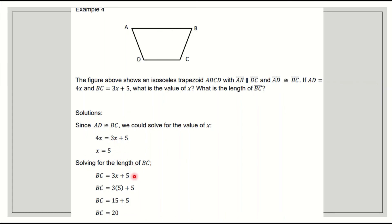Solving for the length of BC. BC is equal to 3x plus 5, so 3 times 5 plus 5. 15 plus 5 is 20. So the value of BC is 20. If BC is 20, what is the value of AD? Of course, 20 as well, because they are congruent.